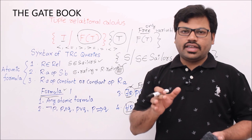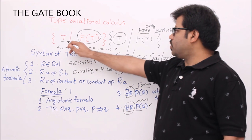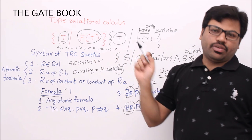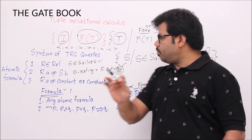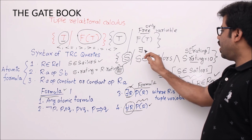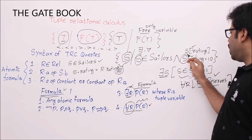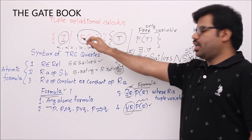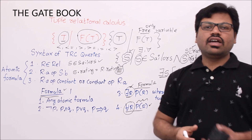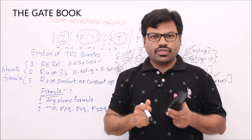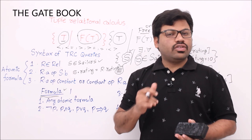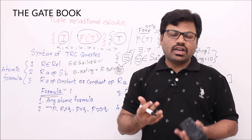In our query form, the tuple T which is going to be printed should be a free variable and the only free variable; all others should be bound. For example, here you are printing S. Did I write 'there exists' or 'for all' with S? No. So S is a free variable — that's why it is eligible to be printed. S is not attached with 'there exists R' or 'for all' at all. Now we will see how to write queries with these formulas. You can learn by observing examples, and automatically you will learn how to write the formulas.